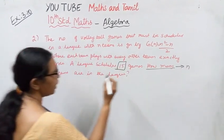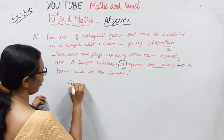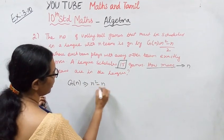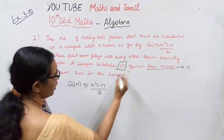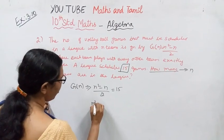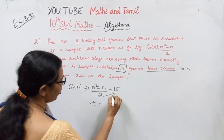We need to find n. Given g(n) = n² - n/2, and the league scheduled 15 games, that equals 15. So n² - n/2 = 15. Multiply both sides by 2 to get n² - n = 2 × 15 = 30.